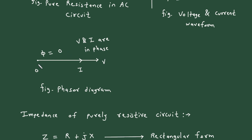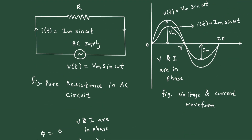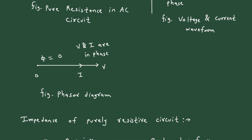For the phasor diagram, we take V as the reference because it starts from 0 and the amplitude of V is greater than I. The current I is on the same arrow but with smaller length, since the arrow length represents magnitude. V and I are in phase, and the phase angle φ = 0. This is the phasor diagram.